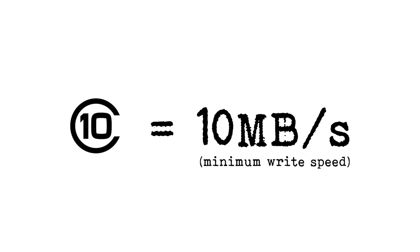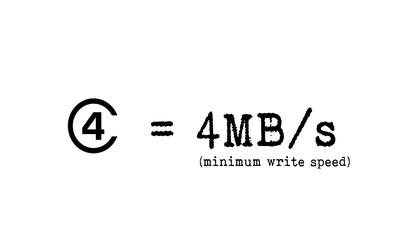The classifications seem really complex but they're not — they've just used different logos at different times. You have a C classification, a U classification, and a V classification. They all mean the same thing but they've been written in different ways with different logos. The C system is a letter C with a number within it, where the number refers to the megabytes per second write speed. So C10 is 10 megabytes per second minimum write speed, and C4 is 4 megabytes per second minimum write speed.